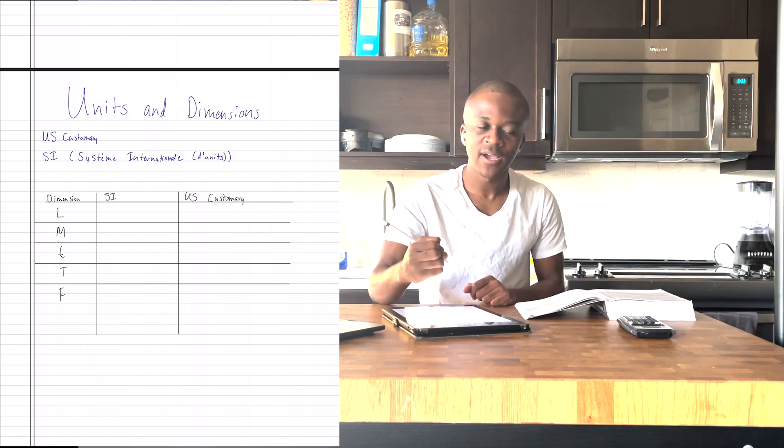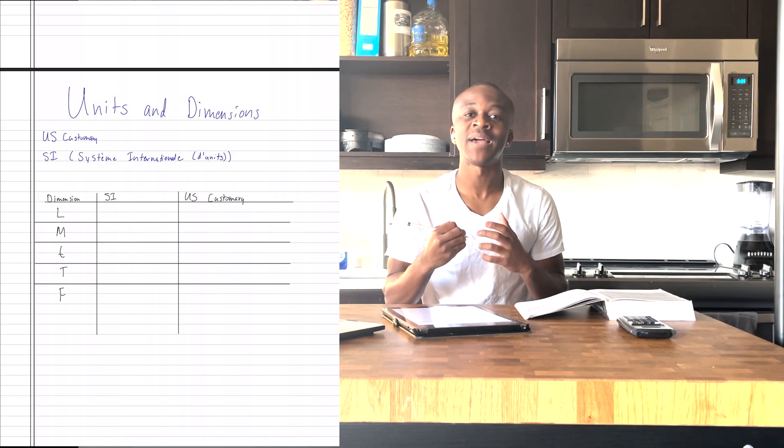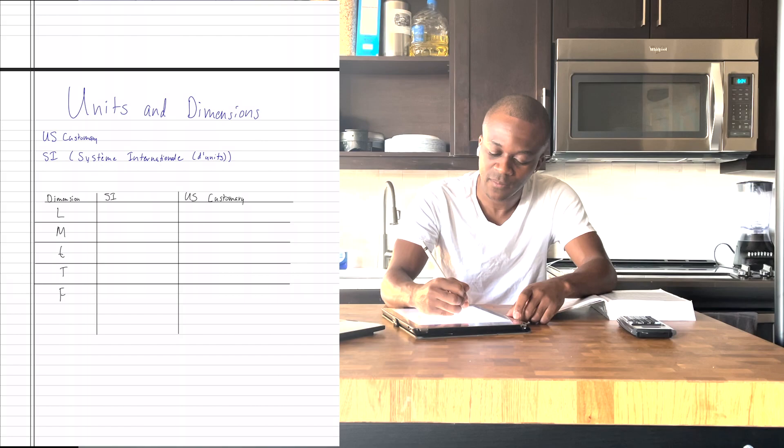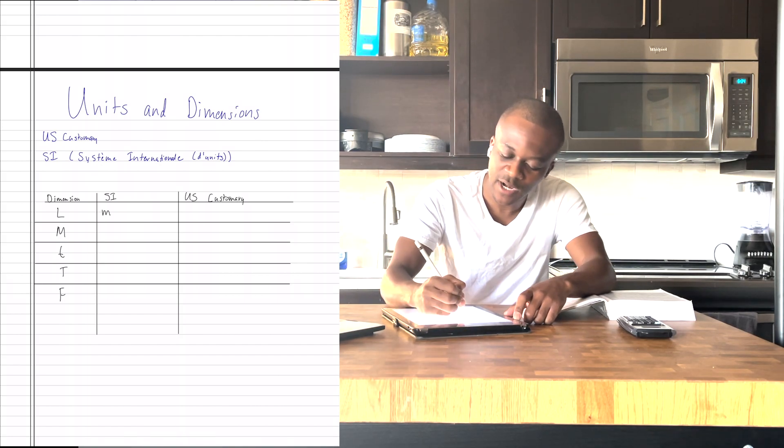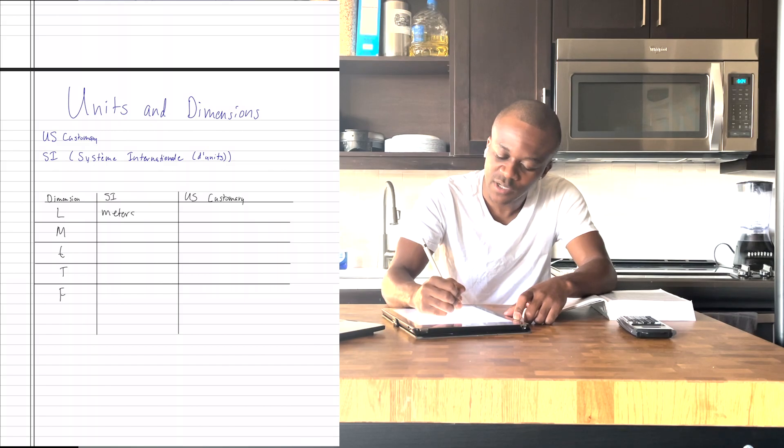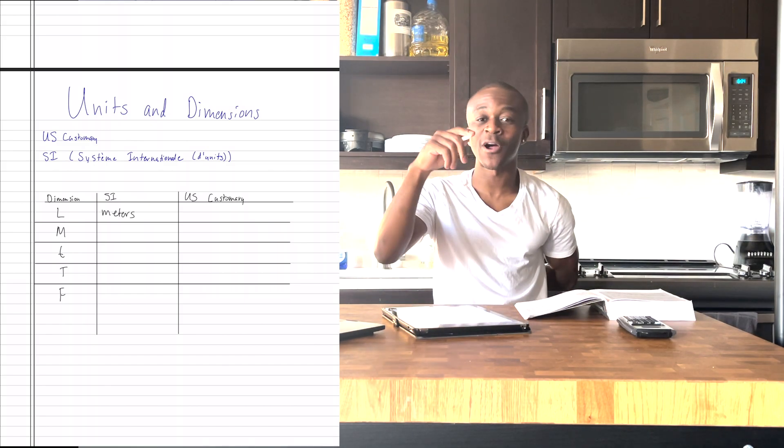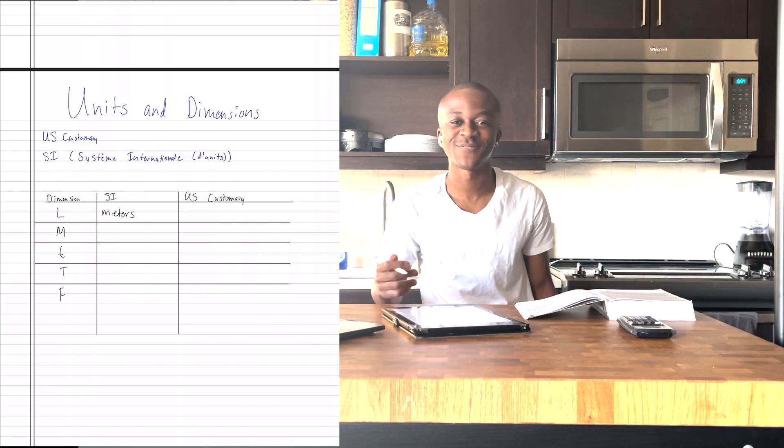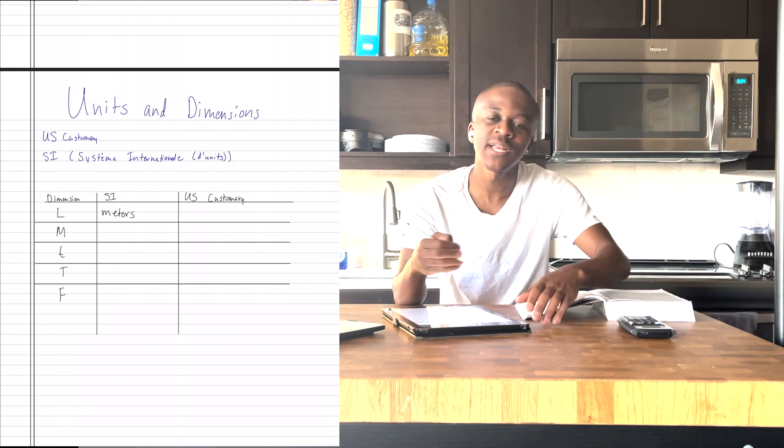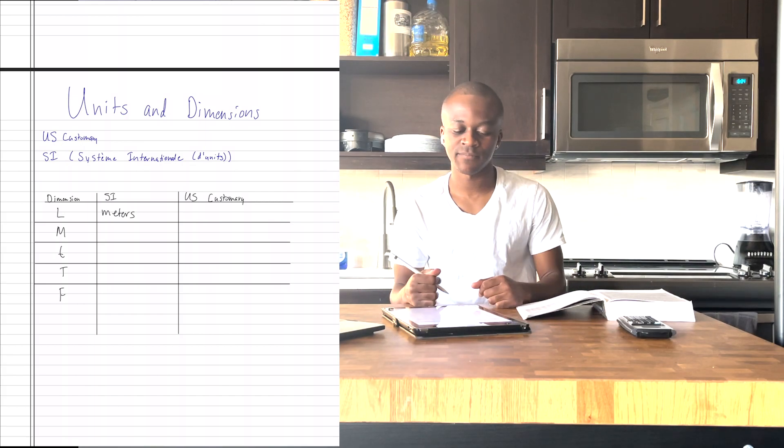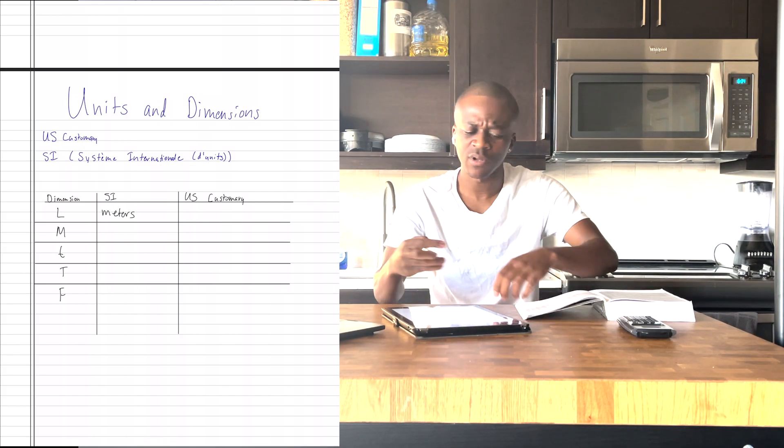So in the SI system, my length is going to be given by meters. I don't want to write out the whole thing. Oh yes, I'll write out the whole thing. So meters, depending on where you are in the world, you might spell it M-E-T-R-E. I'm American, so we say M-E-T-E-R. But it's given by meters.